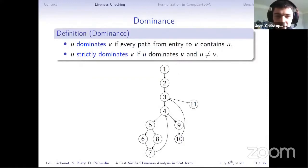Let me recall the formal definition of dominance. We say that node U dominates node V if every path from entry to V contains U, and it strictly dominates V if moreover U and V are different. So here is a small CFG. For example, we can see that 2 dominates 5 since we necessarily need to go through 2 if we have a path from 1 to 5. And for example, 5 does not dominate 9, because we have this path 1, 2, 3, 4, 9 that connects 1 and 9 and does not contain 5.